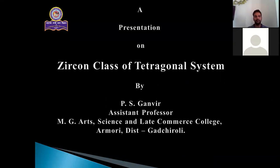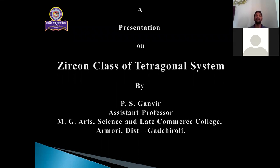Good morning. Today we are going to discuss the zircon class of the tetragonal system. In our last session, we saw the Galena class of the isometric system, where we covered the forms, examples, axial diagrams, and symmetry elements. The isometric system shows maximum symmetry elements because their axes are equal in length and perpendicular in nature. But as we move to the tetragonal system, symmetry gets slightly distorted because the vertical axis is either longer or shorter, and because of which an entirely different crystal system has originated.